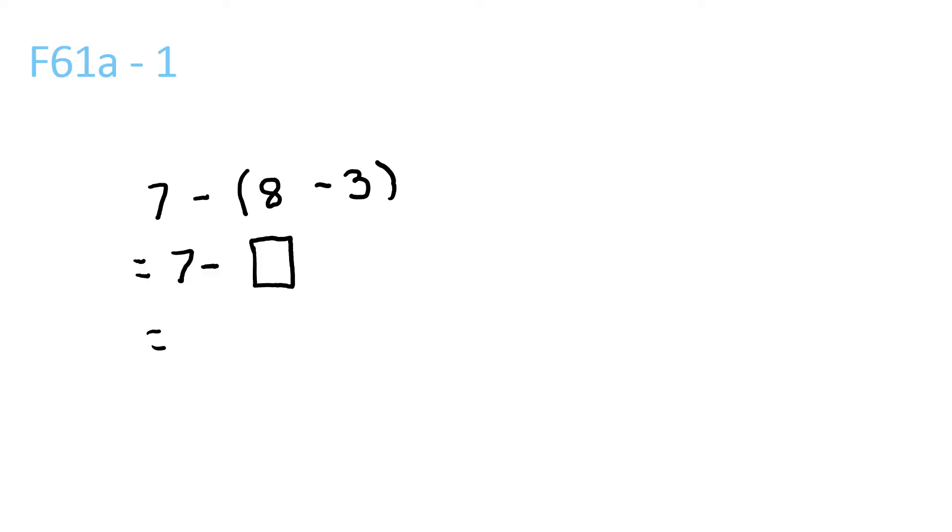So first question. 7 minus 8 plus 3. Since we have BEDMAS, we can decide that brackets are first. So we work out the brackets. 8 minus 3 is 5. 7 minus 5 is 2.